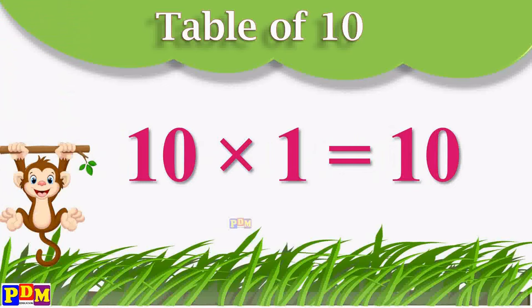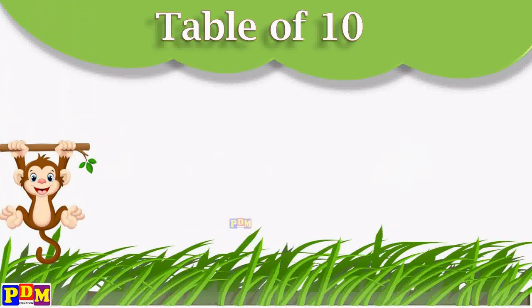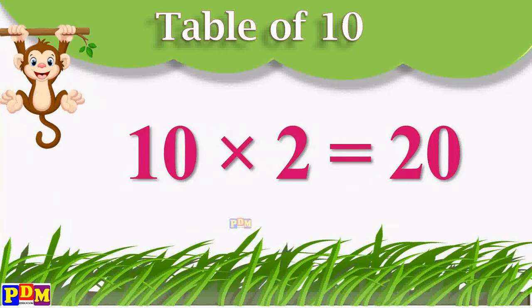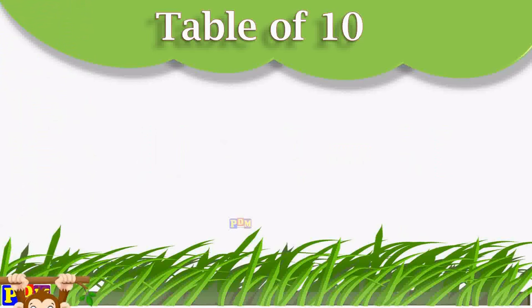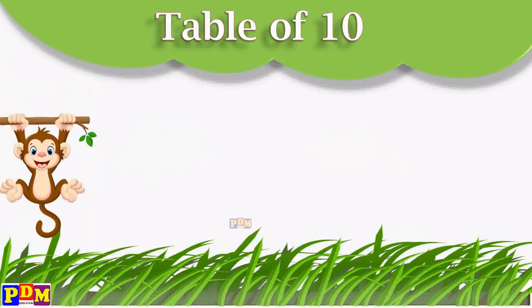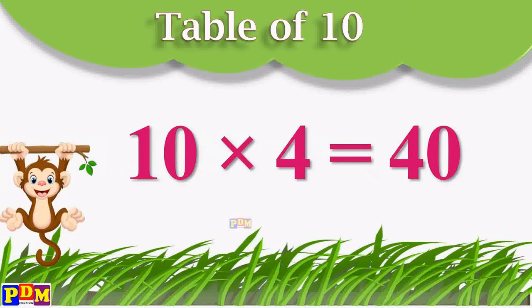10 ones are 10. 10 twos are 20. 10 threes are 30. 10 fours are 40.